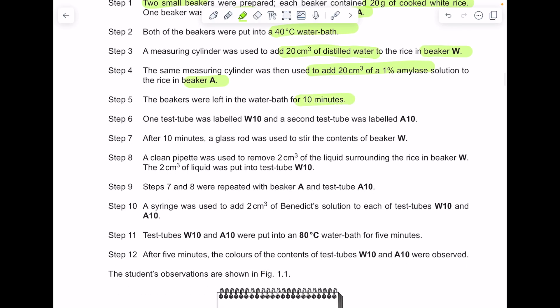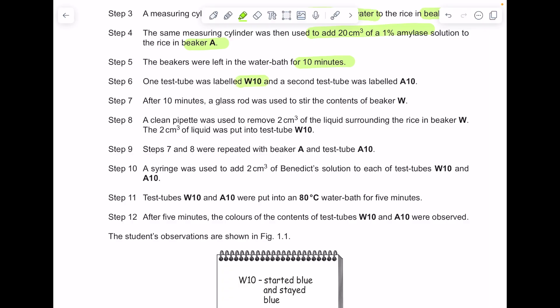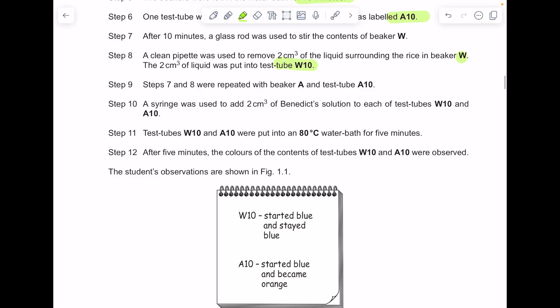The beakers were left in the water bath for 10 minutes. One test tube was labelled W10, the second one was labelled A10. After 10 minutes, a glass rod was used to stir the contents of beaker W. A clean pipette was used to remove 2 centimeters cubed of the liquid surrounding the rice in beaker W. The 2 centimeters cubed of liquid was put in test tube W10. Steps 7 and 8 were repeated with beaker A and test tube A10. A syringe was used to add 2 centimeters cubed of Benedict's solution to each of the test tubes. Test tubes W10 and A10 were put in an 80 degree water bath for 5 minutes. After 5 minutes, the colors of the contents of test tubes W10 and A10 were observed.